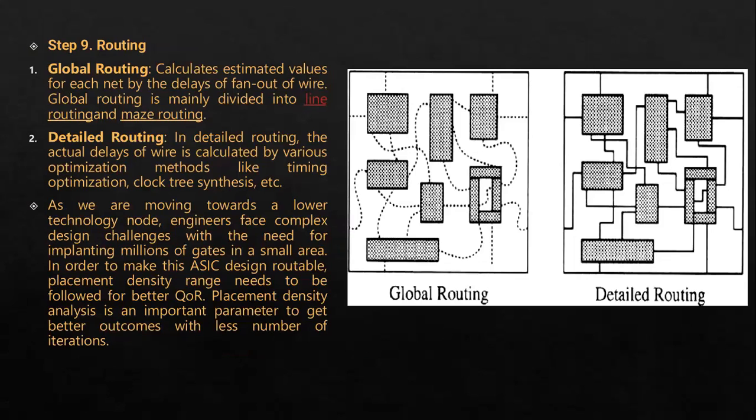In detailed routing, CTS engineers check whether after final detailed routing the clocks are reaching properly or not. It is a back and forth passing of the chips until it makes sure that the timing constraints are met and power constraints are optimized. Then only it is sent for the final verification.